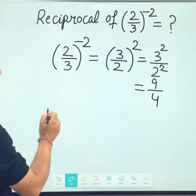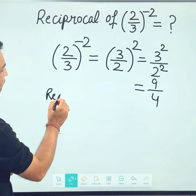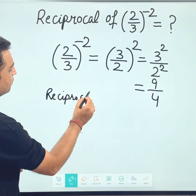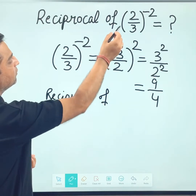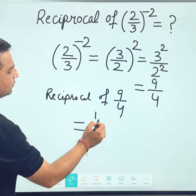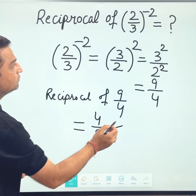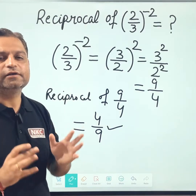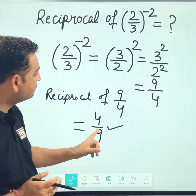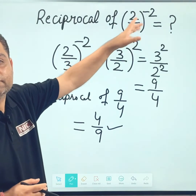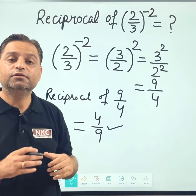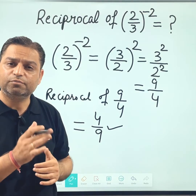So reciprocal of the given value 9 over 4 — I am writing its reciprocal — that is 4 upon 9. That means 4 upon 9 is the answer. This is one way of understanding with the clarification of basic concepts, doing it step by step.